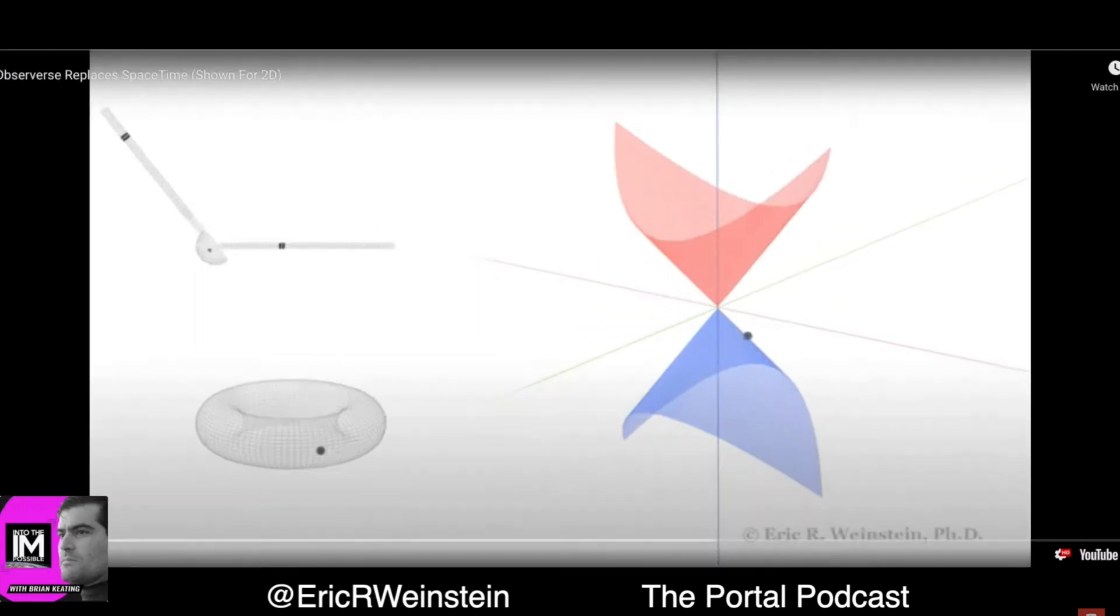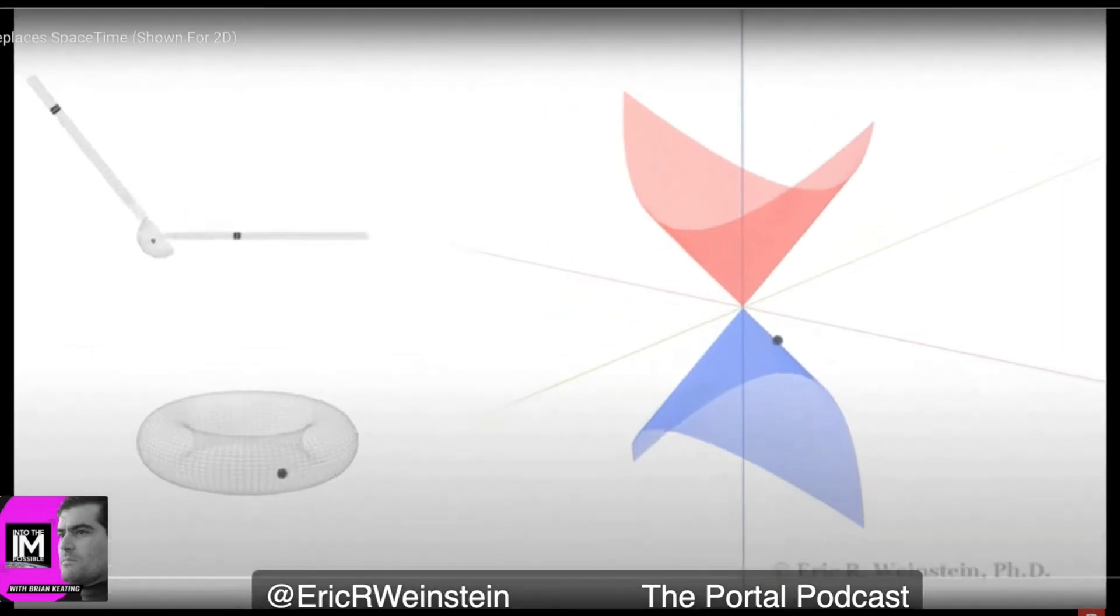Imagine that the torus you see in the lower left corner of the screen is a two-dimensional model, a toy model of space-time. Going around through the center is like Groundhog Day - you come back to the same place, and it's a repeating time cycle. And space is simply a circle.